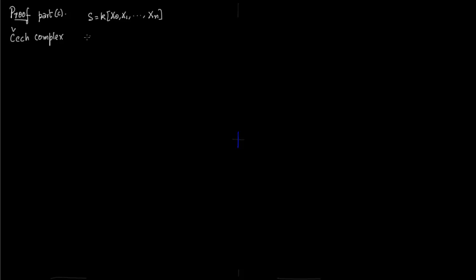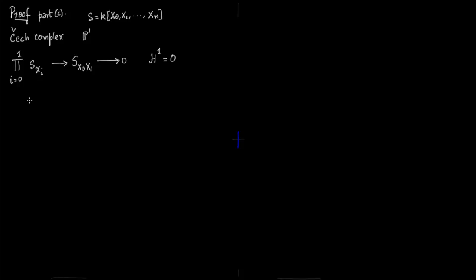First let us fix n as 1, so we just have two variables x0 and x1. This is C¹, the C¹ part of the Čech complex, and then you just end at S of x0, x1. Now S subscript xi is nothing but the ring S localized at xi, and S subscript x0, x1 is ring S localized at x0, x1. Ring S is in n variables; in P¹ it is just k[x0, x1].